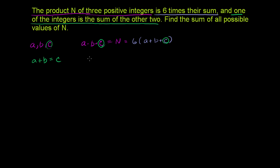So this expression right over here becomes ab, which is just a times b, times c. But instead of c, I'm going to write an a plus b over here. And then that is equal to 6 times a plus b plus c. And so once again, I'll replace the c with an a plus b.